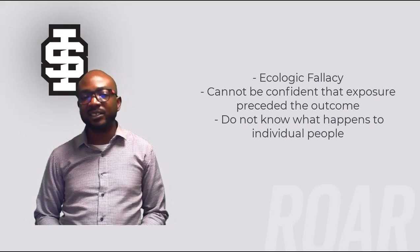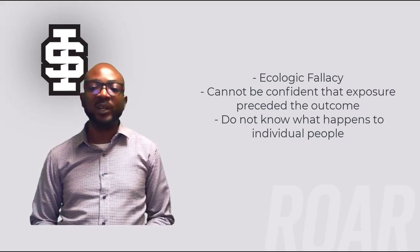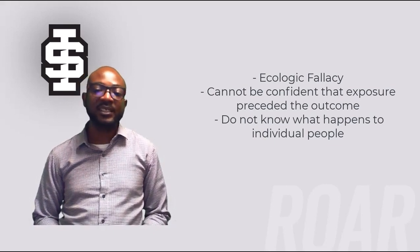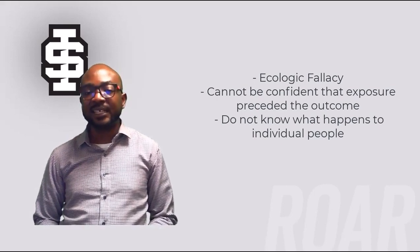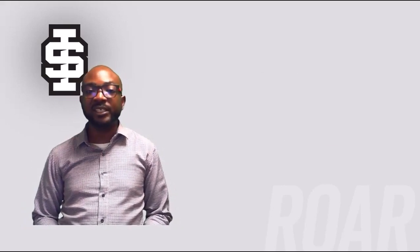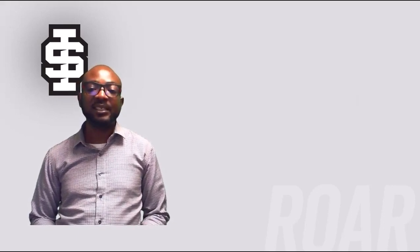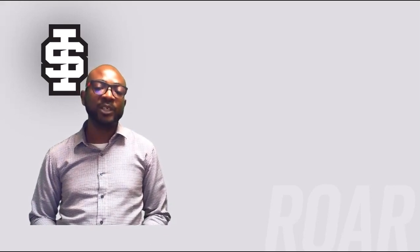Now we discuss limitations of the ecologic study design. Ecologic fallacy refers to concluding that associations at a group or aggregate level are true at the individual level when that might not be the case. Another limitation is that we cannot be confident that the exposure preceded the outcome. Lastly, we do not know what happens to individual people, and migration into and out of communities can bias the interpretation of ecologic studies. It is important to remember that in an ecologic study, either the exposure or the health outcome — or both — are measured at a group level. One example is air pollution measured at a central site used to determine exposures for a population within a 10-mile radius — that is an example of an exposure measured at a group level.